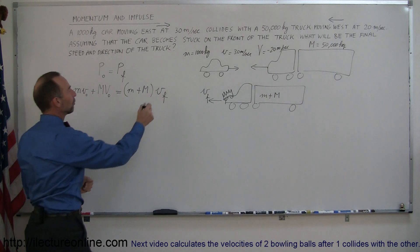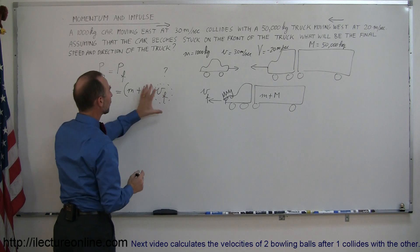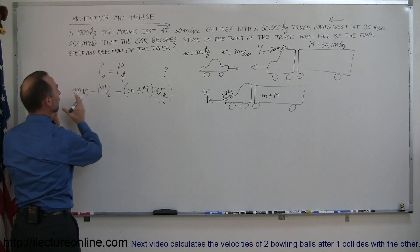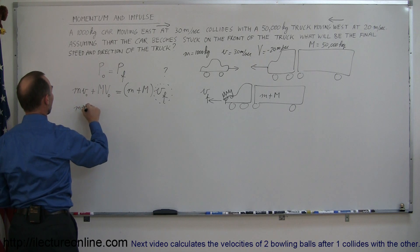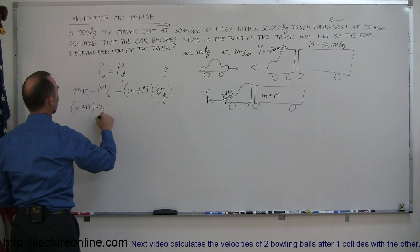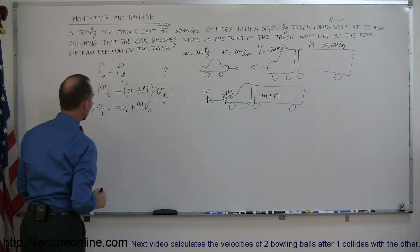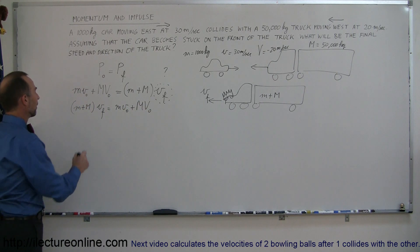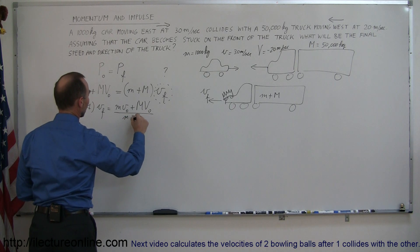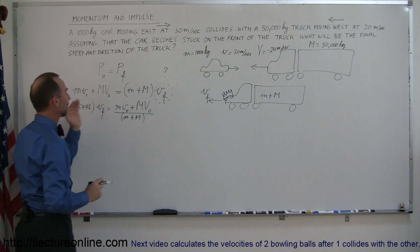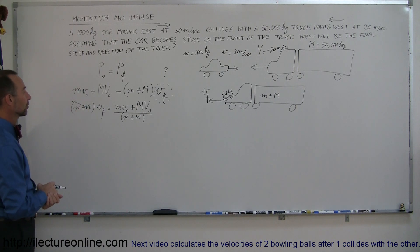Since we're looking for the final velocity, let's rearrange the equation. We get: (m + M) × V_final = m × v_initial + M × V_initial. Then divide both sides by (m + M), giving us an equation for the final velocity of the truck and car together.